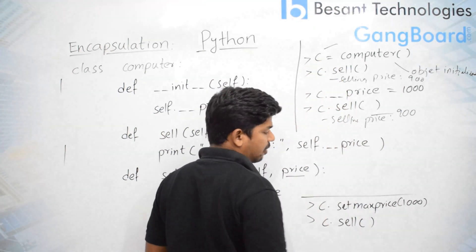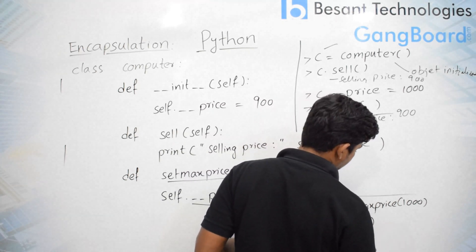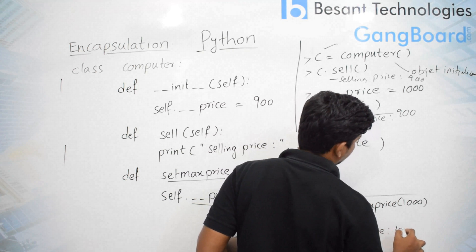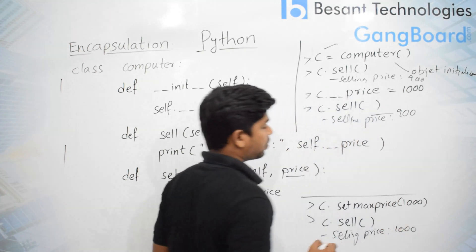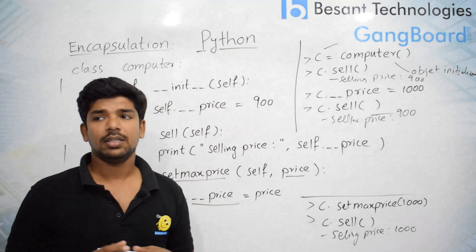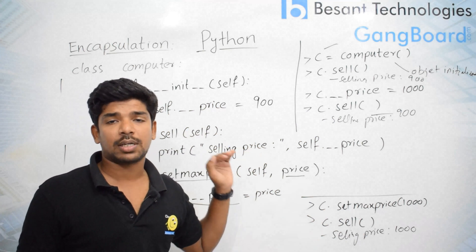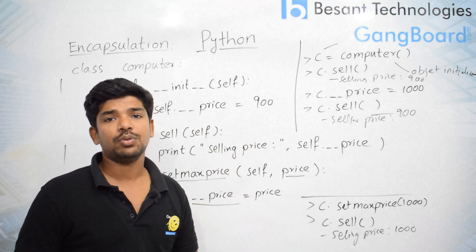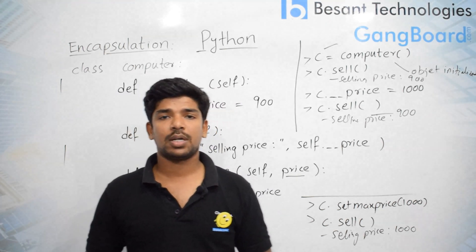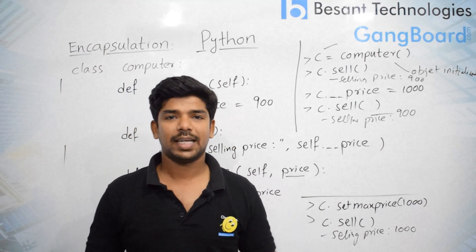The output will be selling price 1000. Using this example you can clearly identify that the value can be changed only through the class methods — no other way to change it. For more queries and details, reach me at Recent Technologies or online through gangboard.com. Thank you.